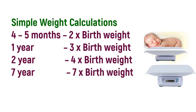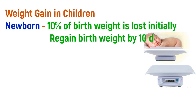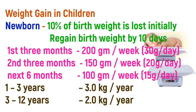Simple weight calculations: At 4 to 5 months, birth weight doubles. At 1 year, birth weight triples. At 2 years, birth weight quadruples. At 7 years, weight is 7 times the birth weight. Weight gain in newborns: 10% of birth weight is lost initially and regained by 10 days. First 3 months: 200g/week (30g/day). Second 3 months: 150g/week (20g/day). Next 6 months: 100g/week (15g/day). For 1–3 years: 3.0 kg/year. For 3–12 years: 2.0 kg/year.